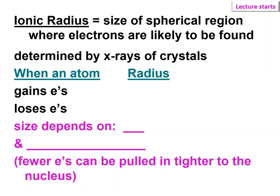So this is what you would think, that if an atom gains electrons to become an anion its radius will increase and if it loses electrons it will decrease.